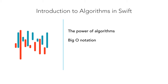Big O estimates the time efficiency of running an algorithm as a function of the input size. We are going to talk about linear time, logarithmic time, constant time, and polynomial time. To understand these concepts, we are going to implement, analyze, and compare a couple of algorithms.